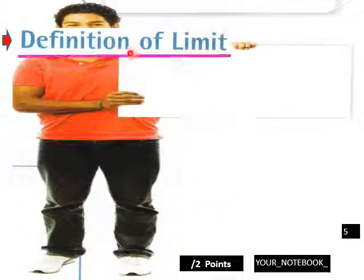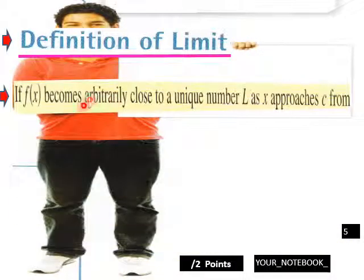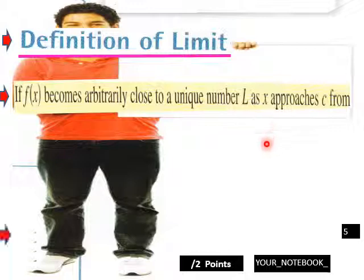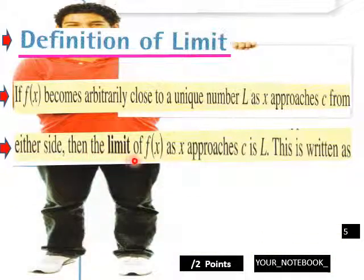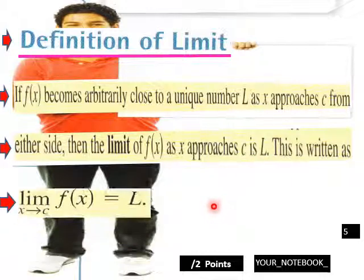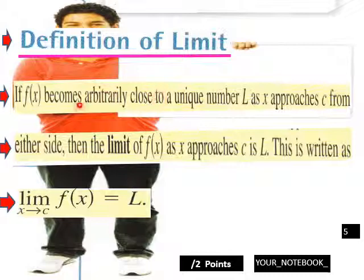Definition of a limit: if f of x becomes arbitrarily close to a unique number L as x approaches c from either side, then the limit of f of x as x approaches c is L. This is written as: the limit of f of x as x approaches c equals L — putting all that language into mathematical notation.